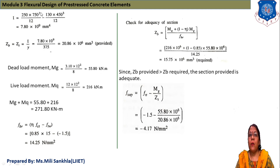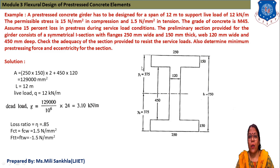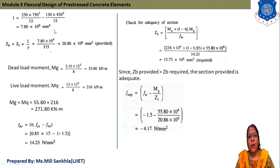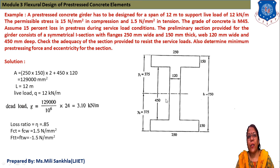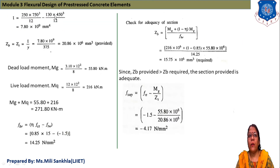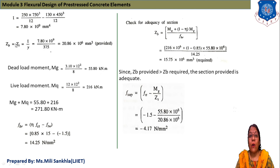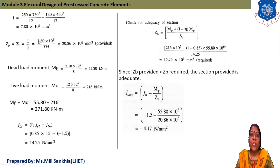Moment of inertia for the I-girder: I = (250 × 750³)/12 − (130 × 450³)/12 = 7.8 × 10⁹ mm⁴. Section modulus: Z_b = Z_t = I/y = 7.8 × 10⁹ / 375 = 20.86 × 10⁶ mm³, where y = 750/2 = 375 mm.